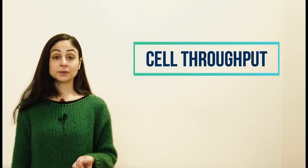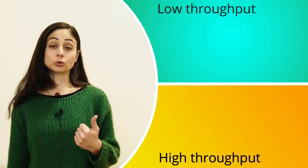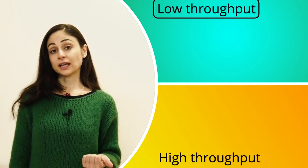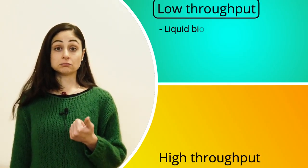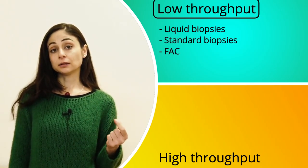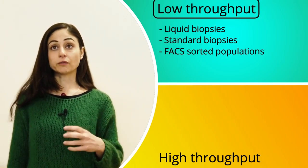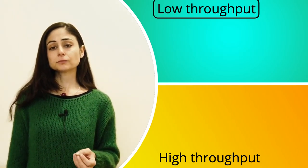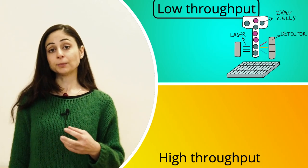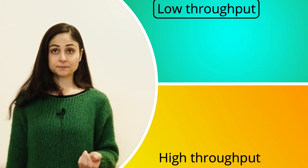One very important parameter is therefore the throughput we require. There are two scenarios. We can work with low cell numbers — low throughput — for example in the case we are dealing with liquid biopsies, general biopsies, or already separated subpopulations of FACS-sorted cells. In this case, we will use a plate-based approach or integrated fluidic circuits.